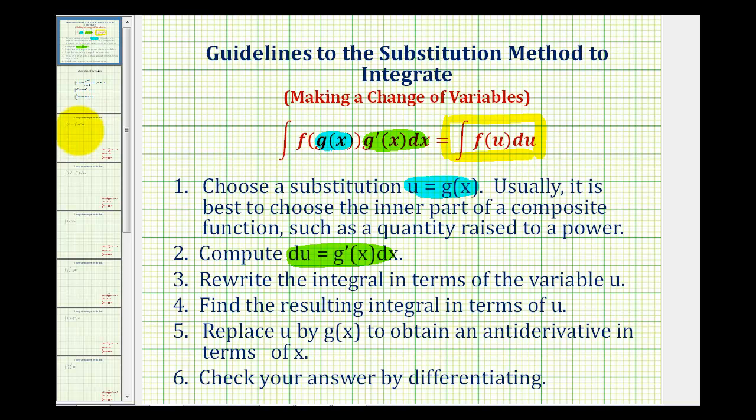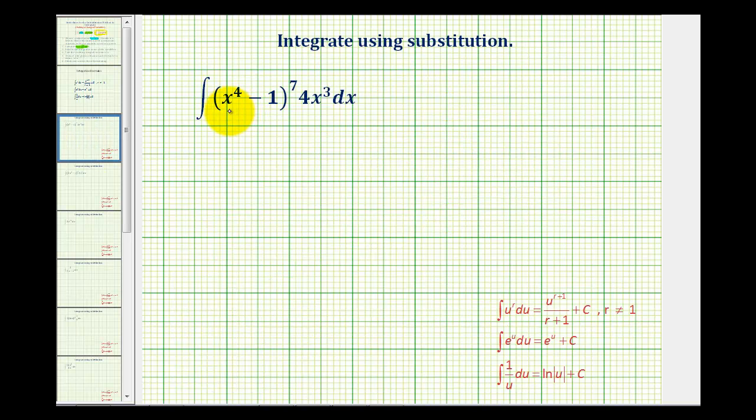So let's go back to our example now. Notice we have the quantity x to the fourth minus one raised to the seventh power, so we'll let u equal the inner function of x to the fourth minus one.